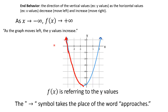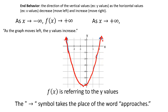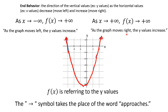So we went to our left; now we've got to figure out what's happening as we move to the right. As x-values increase towards positive infinity, what's happening to our y's? As we go to our right, you can see that the y-values are going up and they're going towards positive infinity. So we can say as the graph moves right, the y-values increase.